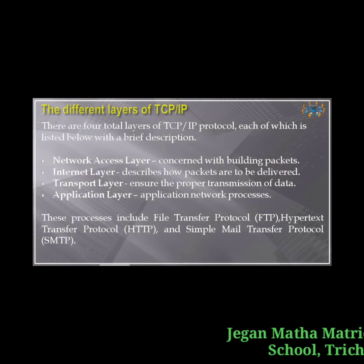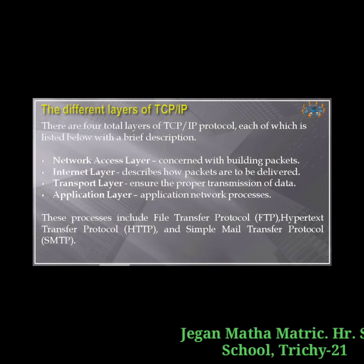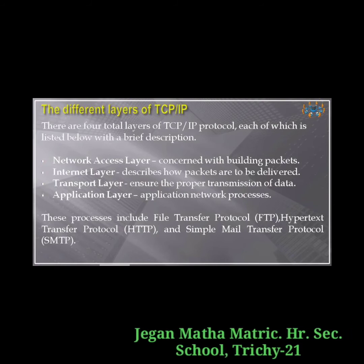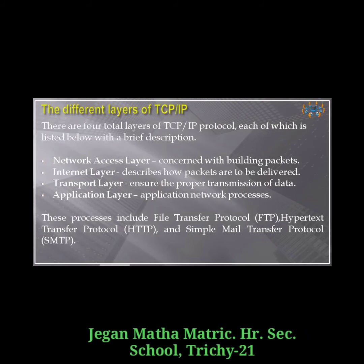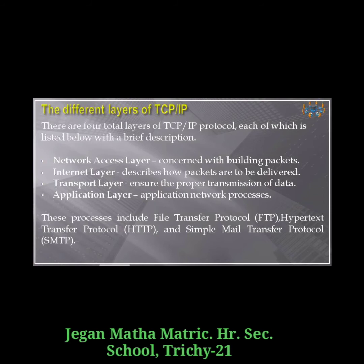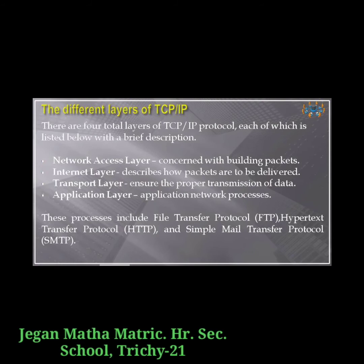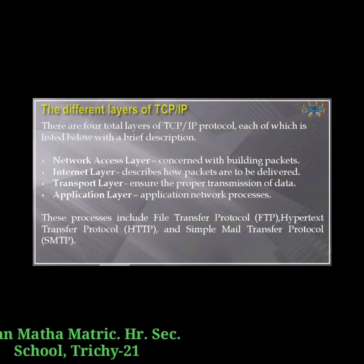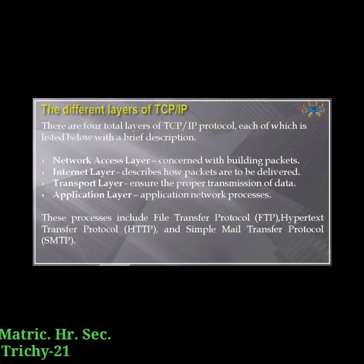Different layers of TCP/IP: while the OSI model has seven layers, TCP/IP uses four layers. The first is the network access layer, concerned with building packets. Second is the internet layer, which describes how packets are to be delivered. Third is the transport layer, which ensures proper transmission of data. Fourth is the application layer, which handles application network processes including FTP, HTTP, and SMTP.